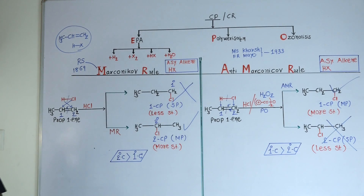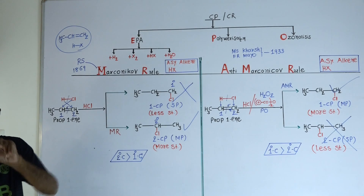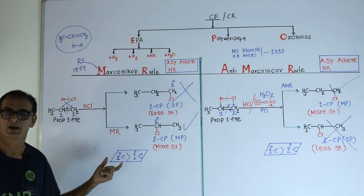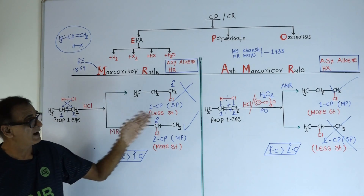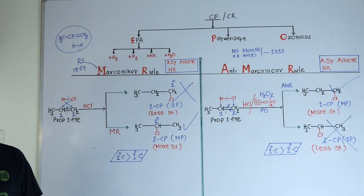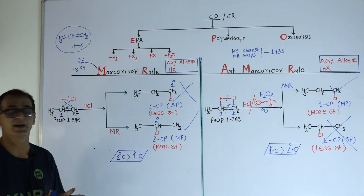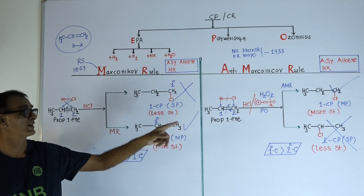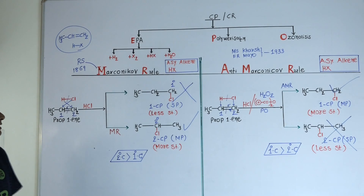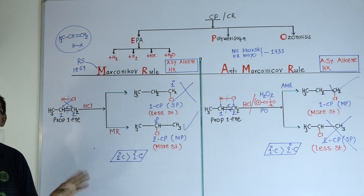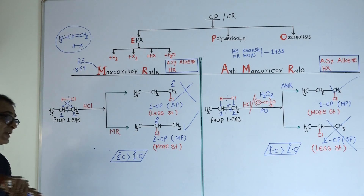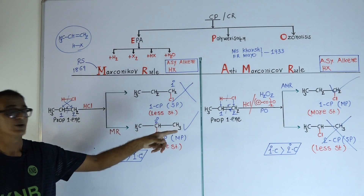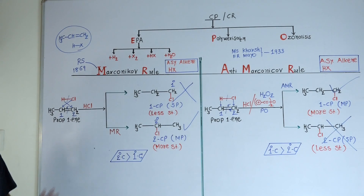In summary, Markovnikov rule and Anti-Markovnikov rule give totally reversed products. During Markovnikov rule, the reaction is carried out between an asymmetric alkene and an asymmetric reagent with no peroxide catalyst — and we get 2-chloropropane. During Anti-Markovnikov rule, the reaction is also between an asymmetric alkene and an asymmetric reagent, but a peroxide compound is used as a catalyst — and we get 1-chloropropane.